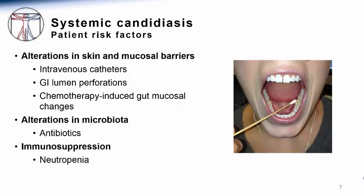Candida species can be normal inhabitants of the mouth, gut, and vaginal tract of healthy people. How, then, do these fungi enter the host and cause disease? Most commonly this occurs through alterations in normal constitutive barriers of the skin and mucosal surfaces.